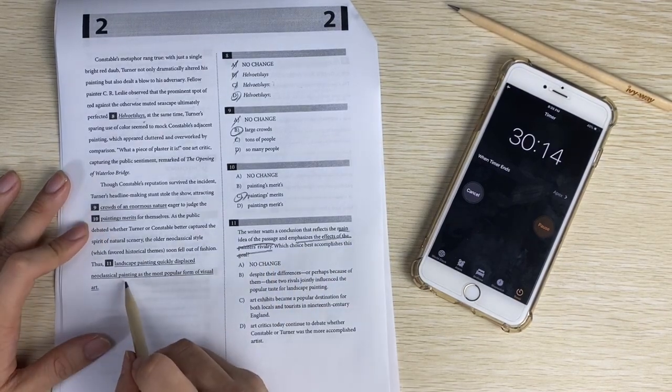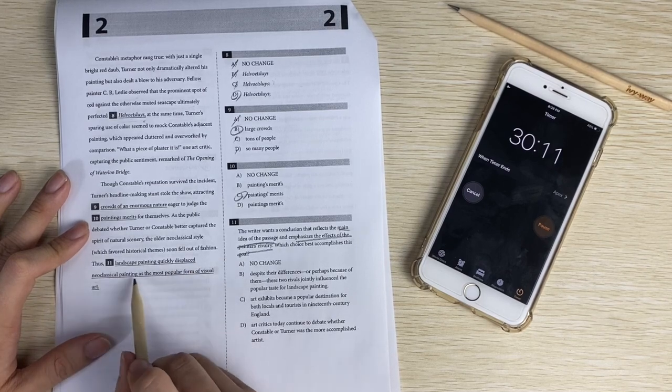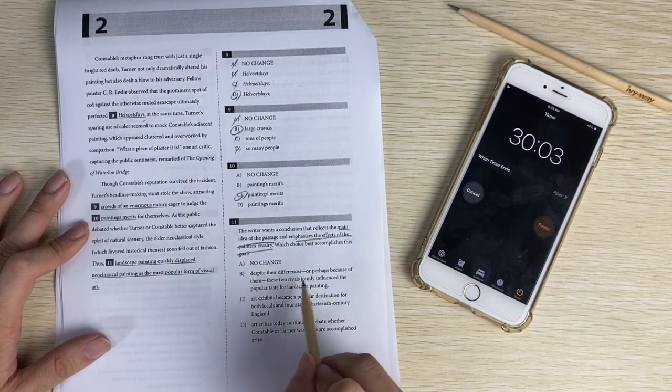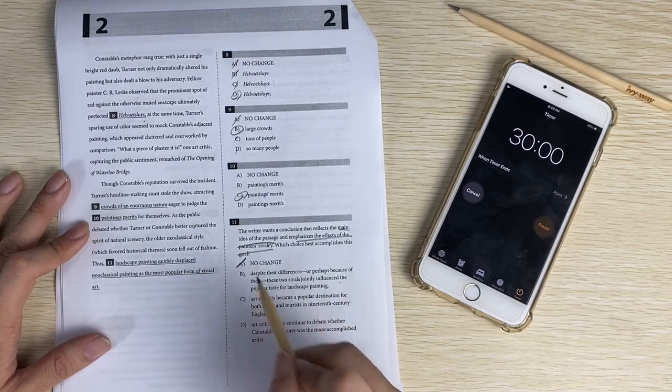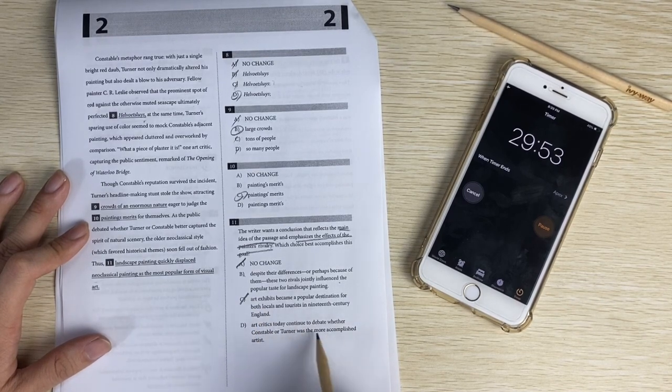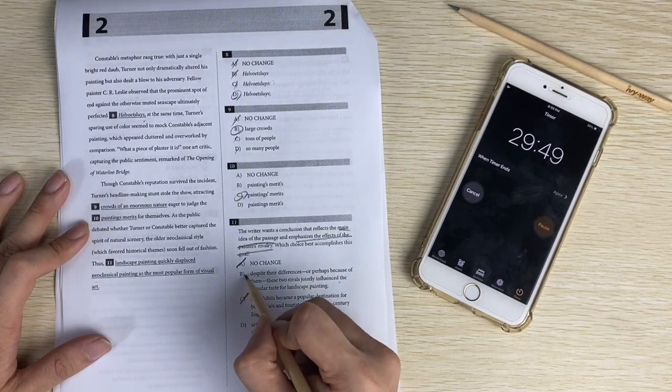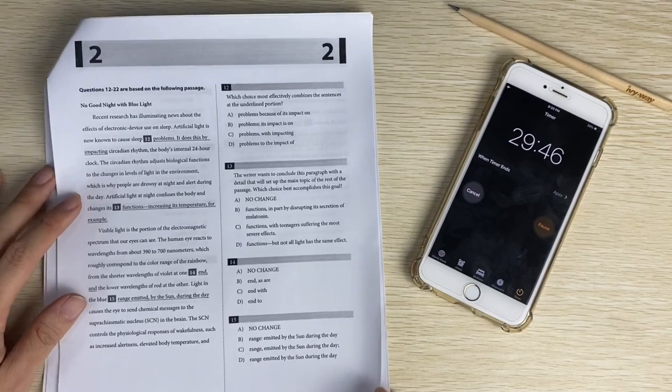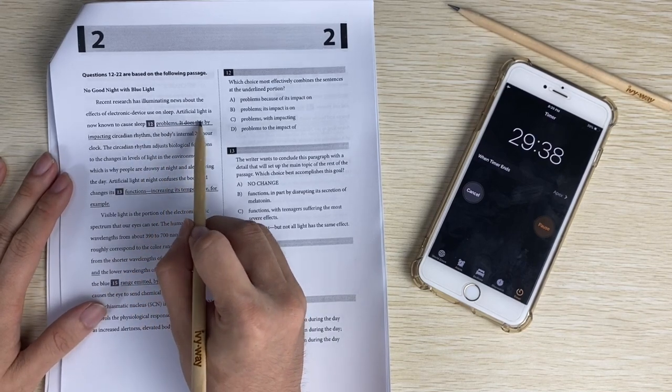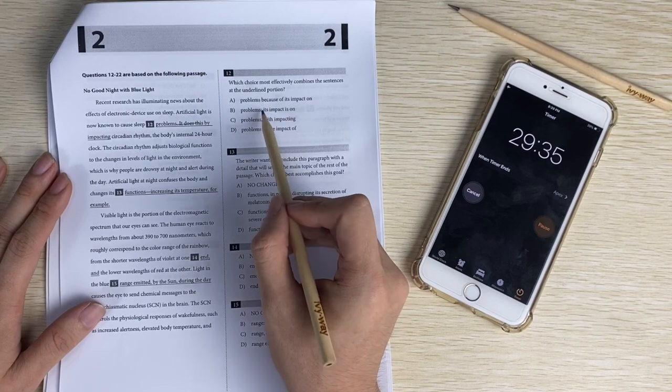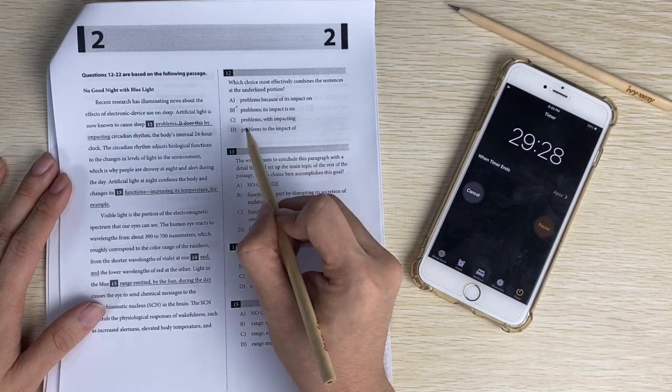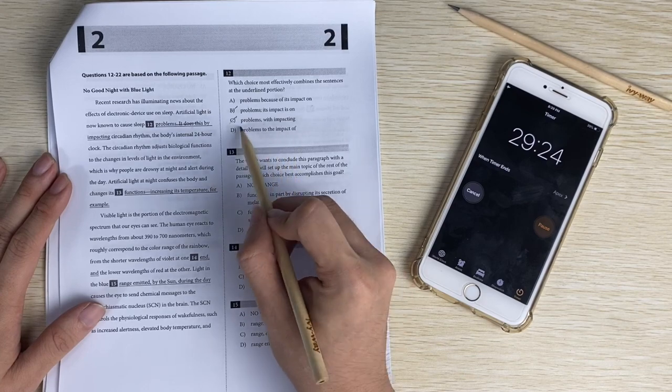Number eleven, reflect the main idea of the passage and emphasize the effect of the painter's rivalry. Landscape painting displays neoclassical paintings - not about their differences. Despite their differences, the influence popular, that might be right. Art critics debate whether they are - it's not a debate. So it's saying how they change things. Which choice affected combining sentences? Articular light is not known to cause sleep problems by impacting. So problem because of its impact on - not combining them. Problems with impacting, problems to the impact of - not right.